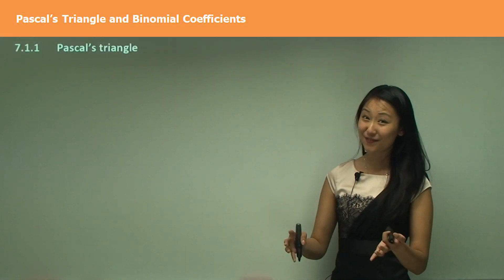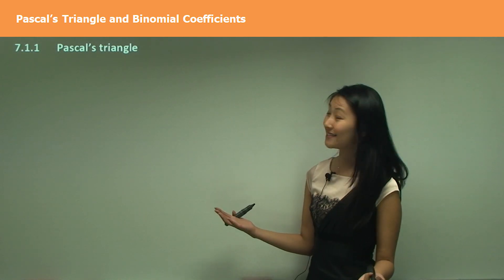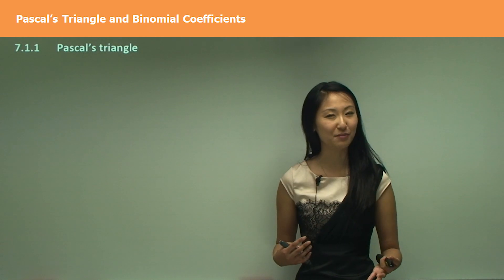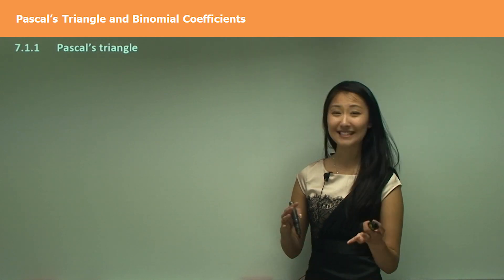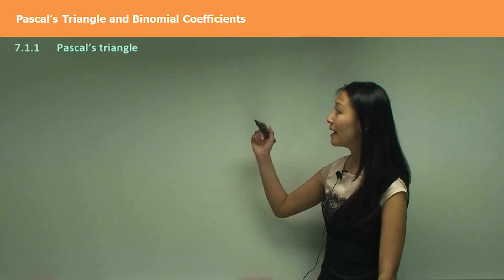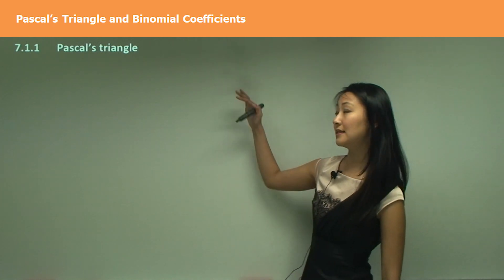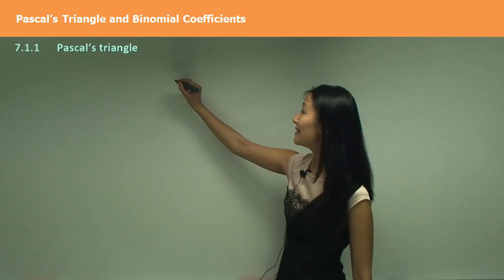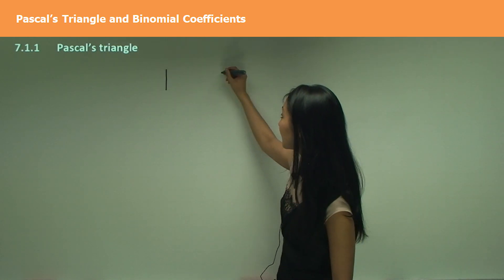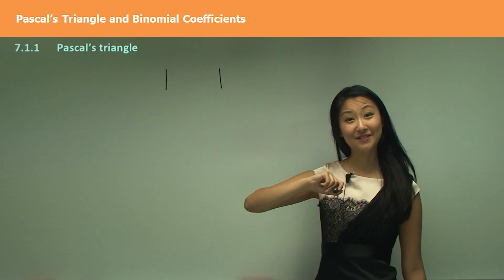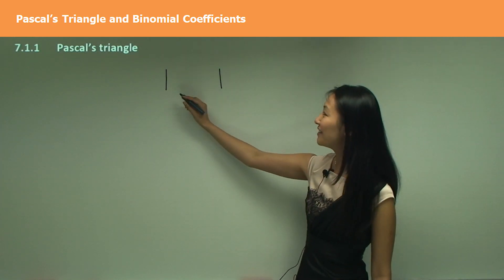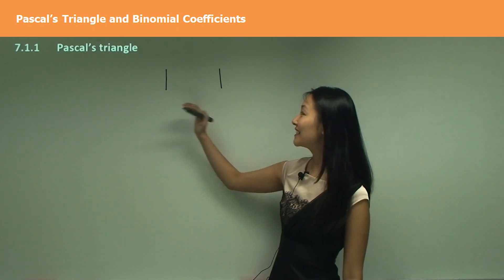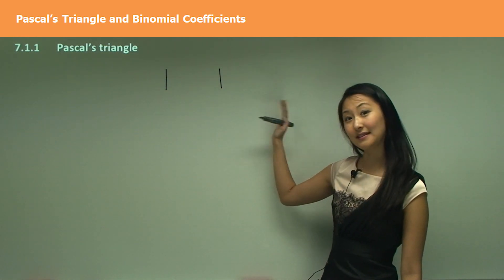First things first, what exactly is Pascal's Triangle? I'm sure we've kind of heard of this term before, but let's revise exactly what it is. Pascal's Triangle is really just a sequence of numbers, but the difference is that it starts off with two numbers, unlike normal sequences — one and one. And then to get the next few numbers, this is what we do.